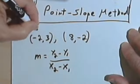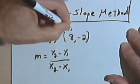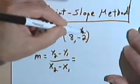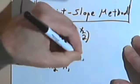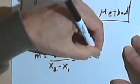And I'll call this x sub 1 and y sub 1, and I'll call this x sub 2 and y sub 2. So I'm going to take the y sub 2, negative 2, and subtract y sub 1, so that's minus 3.